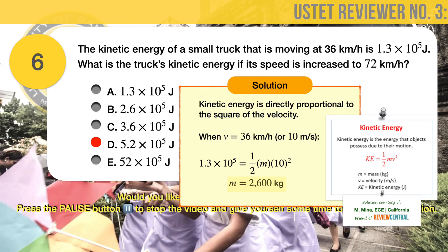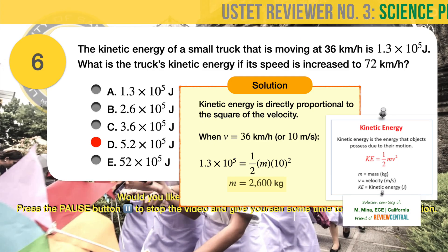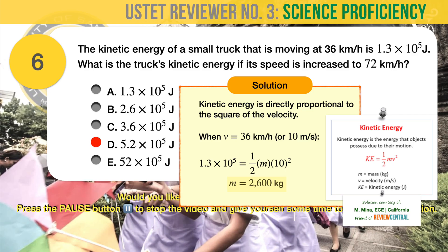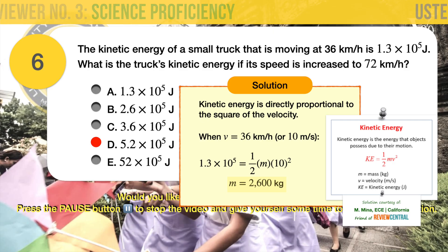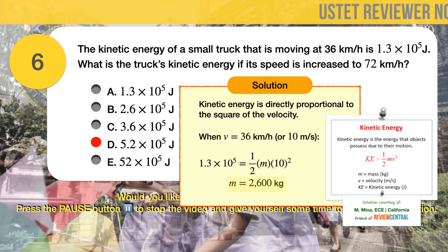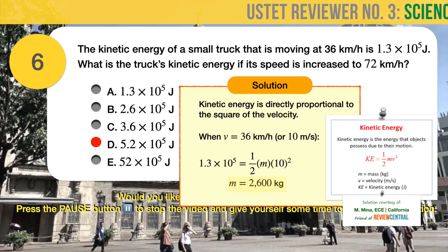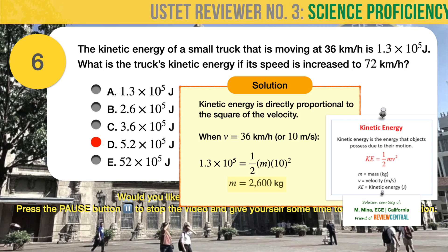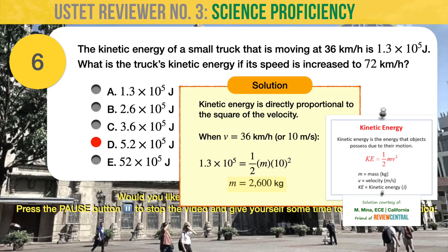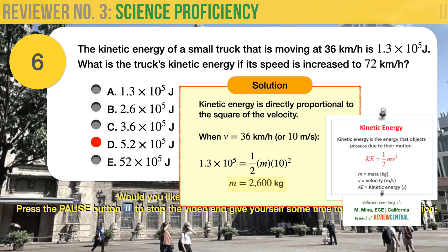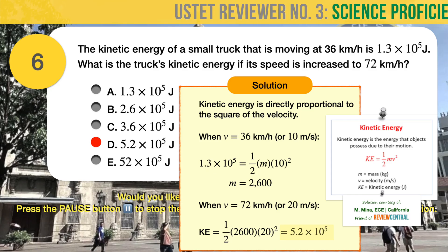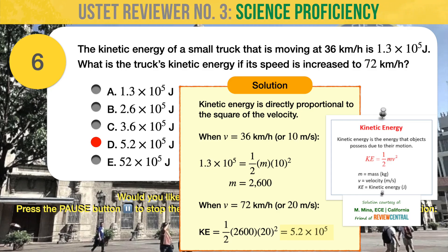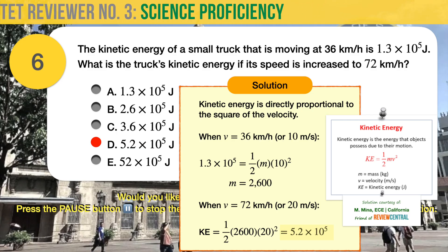Let's prove this mathematically using the kinetic energy formula. When the speed is 36 kilometers per hour, the kinetic energy is 1.3 times 10 raised to 5 joules. Plugging in these values gives 1.3 times 10 raised to 5 equal to 0.5 times mass m times 10 squared. Note that velocity must be expressed in meters per second — converting 36 km/h gives 10 meters per second. From here, we can compute the mass of the truck to be 2,600 kilograms. When the velocity is doubled to 20 meters per second, the kinetic energy is 0.5 times 2,600 times 20 squared, giving a new kinetic energy of 5.2 times 10 raised to 5 joules.